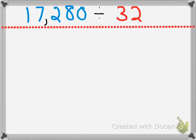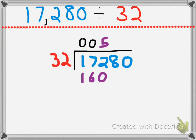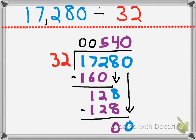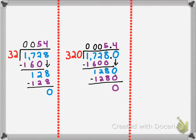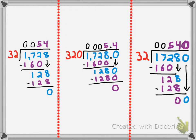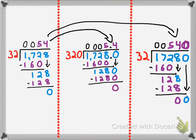We're going to take 17,280 divided by 32. I can see the quotient seems to be a little bigger. Here's my original problem — I got 54 for the original quotient. Then I increased the divisor by 10 and the quotient decreased by a power of 10. When I took the original problem and increased the dividend by a power of 10, the quotient increased by a power of 10. So here it decreased, and here it increased — by a power of 10.